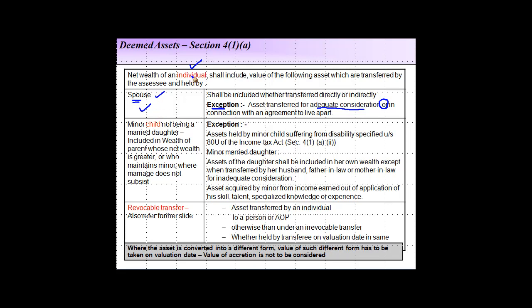Second case: if the individual transfers an asset to a minor child, not being a married daughter, then it will be included in the net wealth of the individual. This minor child could be a step-child or an adopted child — it doesn't make a difference. These provisions are also discussed in detail in one of the subsequent slides.